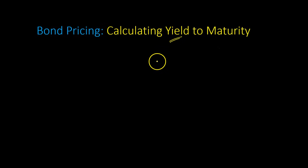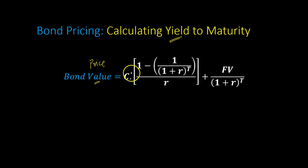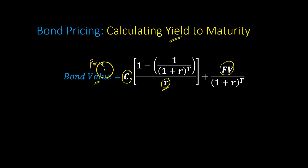Before we get into this, recall how bond pricing works. The formula for bond value or bond price is given as such, where if you have the coupon rate and the coupon payments, if you know the yield that investors require — which is R — and if you know the future value or face value of the bond, then you can input all of those numbers and figure out the price of a bond.